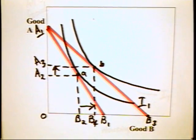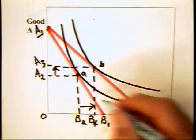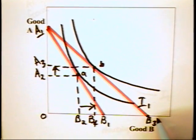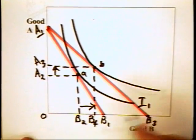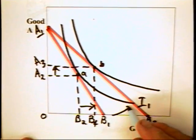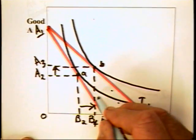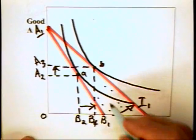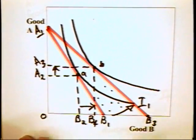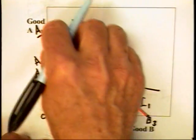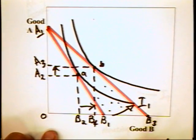Now the question that economists like to address is, is it better to subsidize a particular good like education or for that matter beans than to give people an increase in income? There's obviously an increase in income going to consumers by virtue of the fact that consumers now are able to consume combinations that they once were not able to do. In fact, this whole area represents combinations that were previously unattainable.